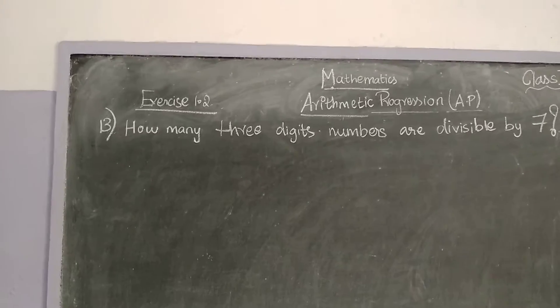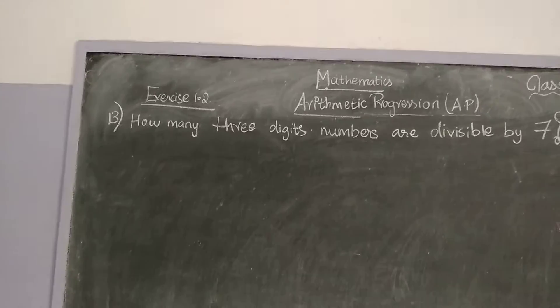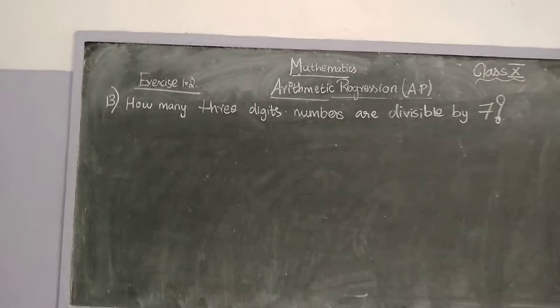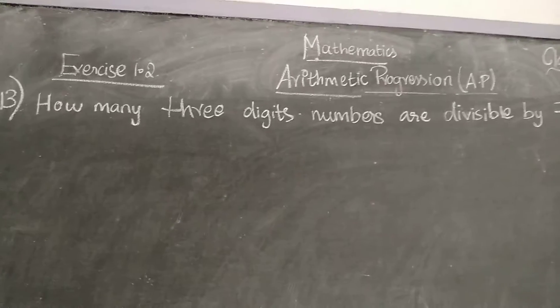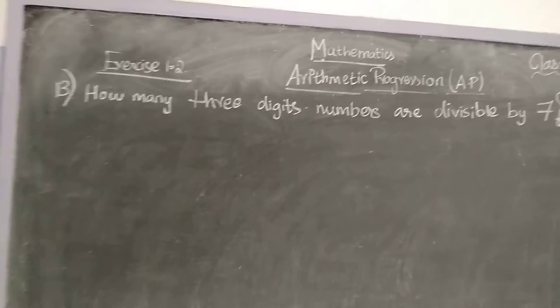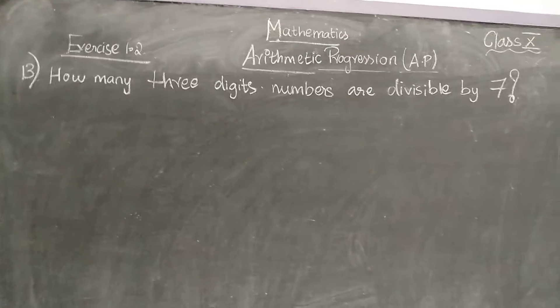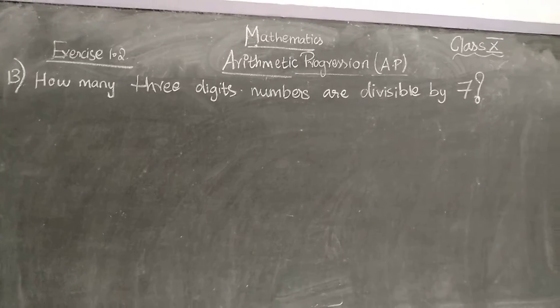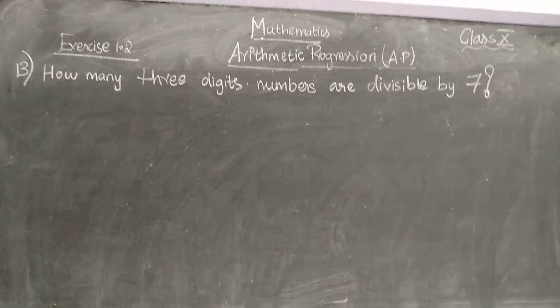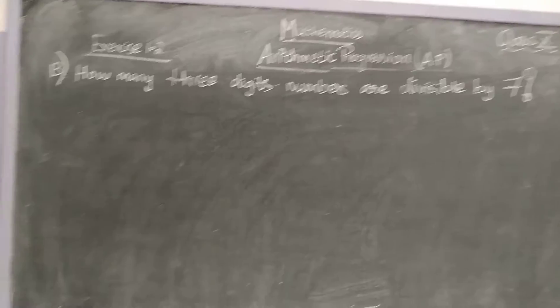How many 3-digit numbers are divisible by 7? I hope you understood this question. How many 3-digit numbers are divisible by 7?